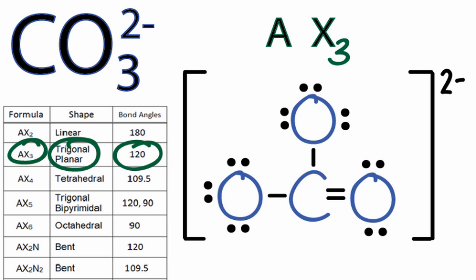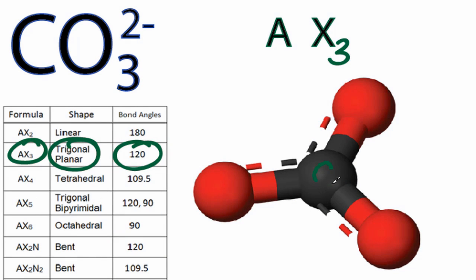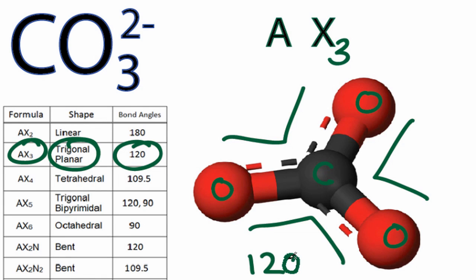We could also look at the three-dimensional structure to confirm that and see what a trigonal planar molecule looks like. So we have a carbon in the center, and then we have the oxygens out here. You can see they're spread out as far away from each other as they can be, and they are in a plane. We can also see that the bond angle right here, right here, or right here is 120 degrees.